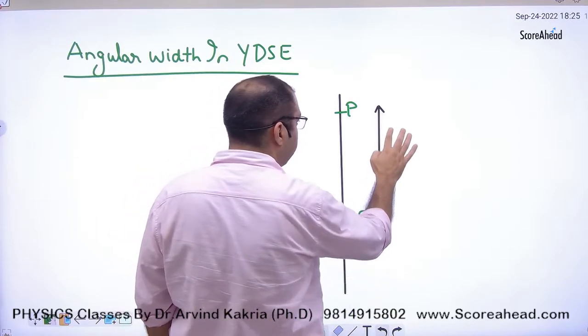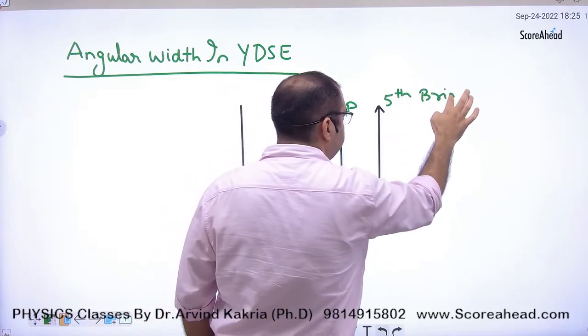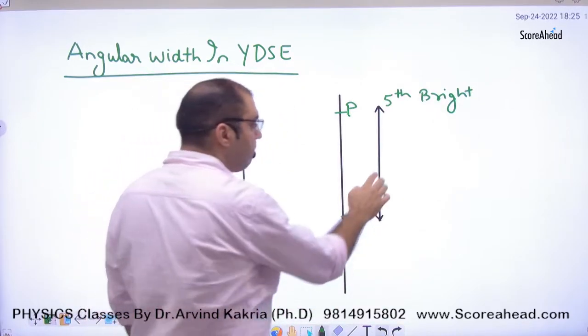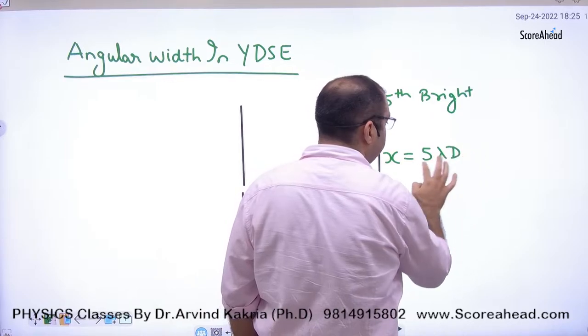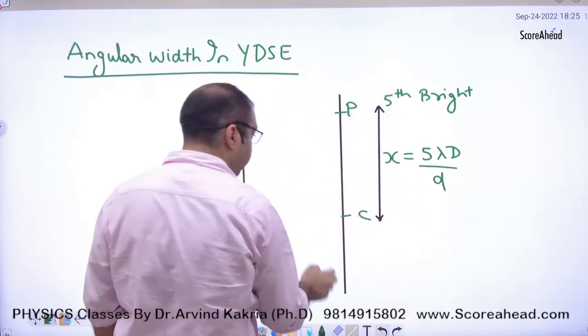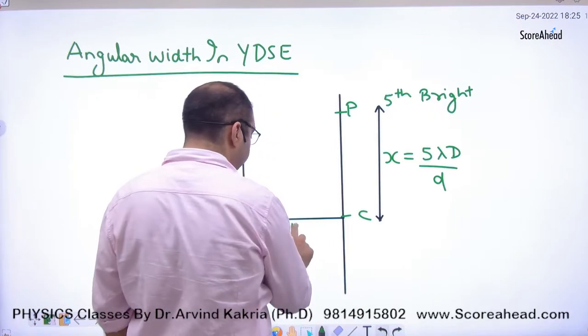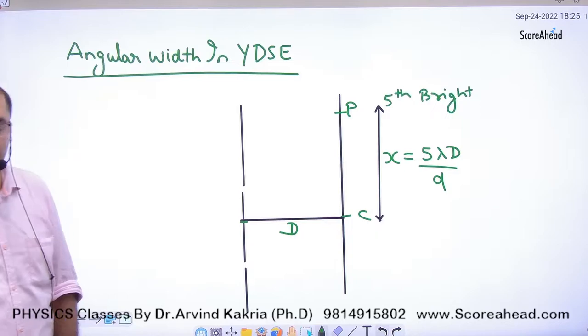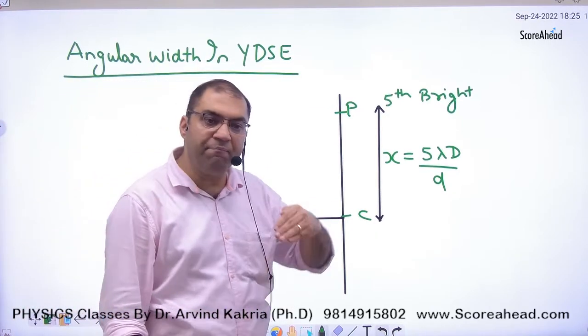I have given you, this is P point. Point 5th brightness. 5th brightness point. 5th brightness point above.